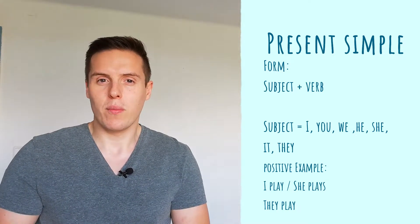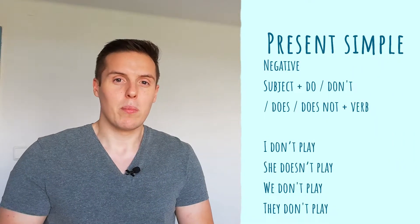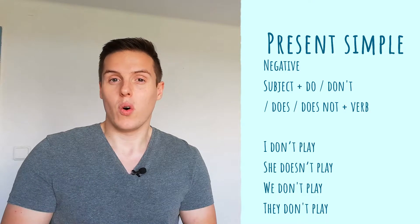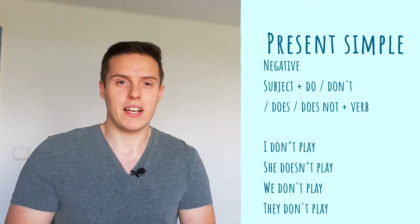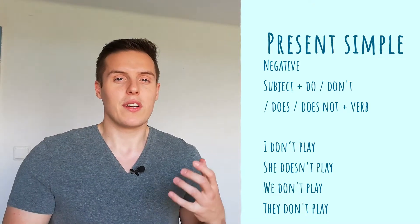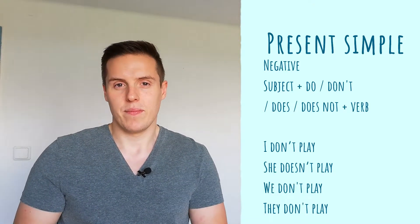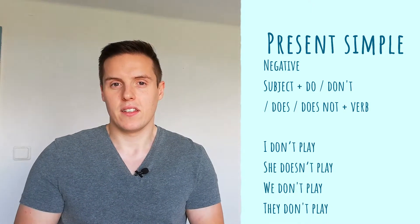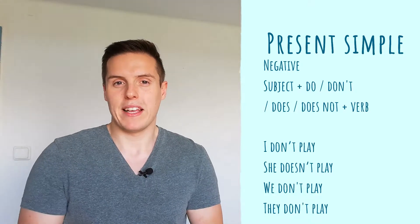The negative form — we add the subject plus do or does, doesn't or don't, depending on the subject, and then the verb. For example: I don't play, she doesn't play, we don't play, or they don't play.